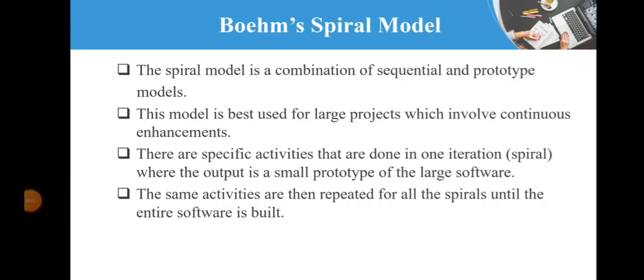Next we are going to see about Boehm's Spiral Model. The spiral model is a combination of sequential and prototype models. It is called spiral because at the end of each phase, a complete version of the product is produced. And this model is well suited for large products which involves continuous enhancements.